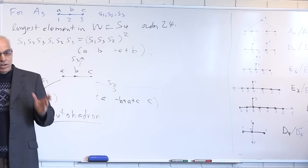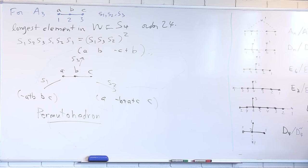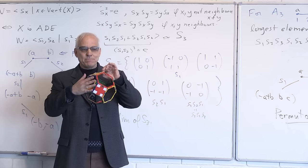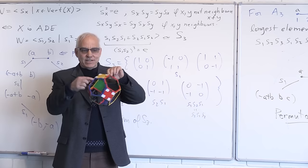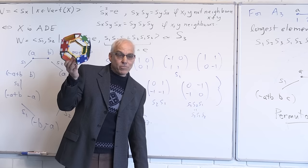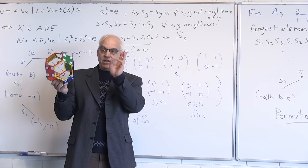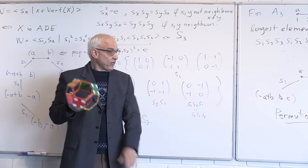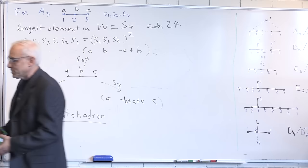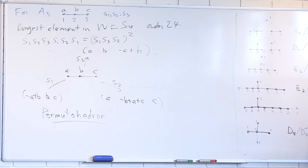When you have a polytope in n-dimensional space, there are at least three non-trivial questions. One is its combinatorial face structure — faces, facets, and containment relations. Then there's the volume. And there's the number of lattice points. These are canonical questions for higher-dimensional polytopes, and the answers for the other Weyl group permutahedra are non-trivial and perhaps not fully settled.